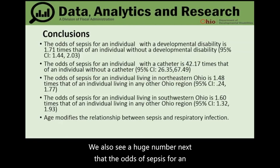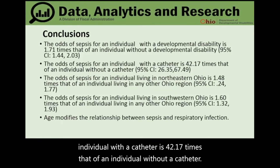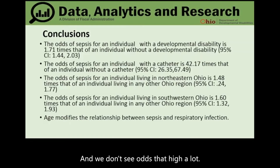The odds of sepsis for an individual with a catheter is 42.17 times that of an individual without a catheter — an unusually high odds ratio that is rarely seen.